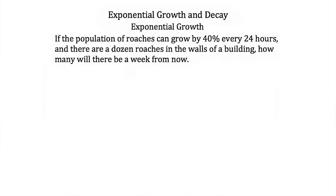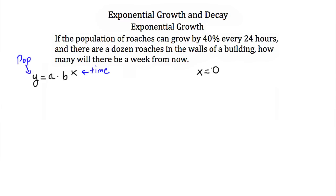Now let's apply exponential growth to a real-life problem. If the population of roaches can grow by 40% every 24 hours, and there are a dozen roaches in the wall of a building, how many will there be a week from now? We'll fit this to the standard exponential function y = a times b to the x, where y is the population and x is time. Before we start, when time equals zero, our population is a dozen, so 12.